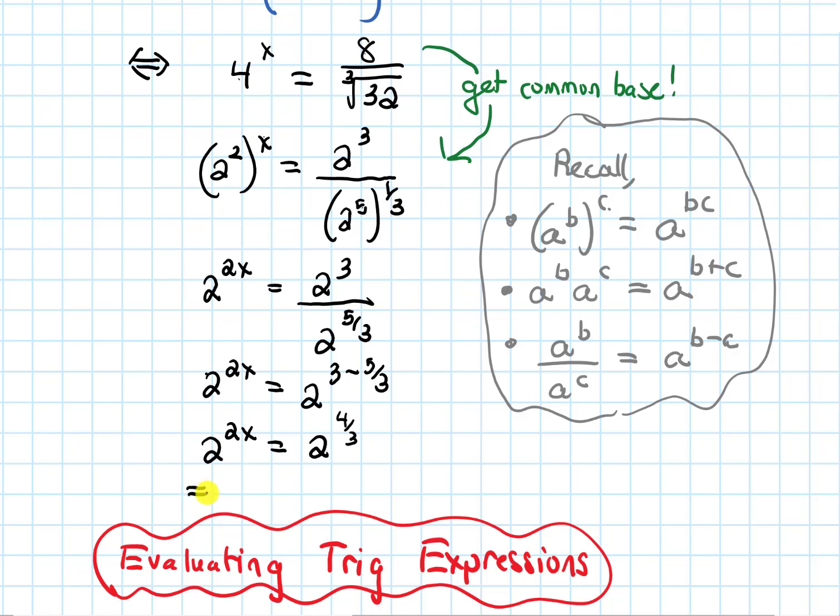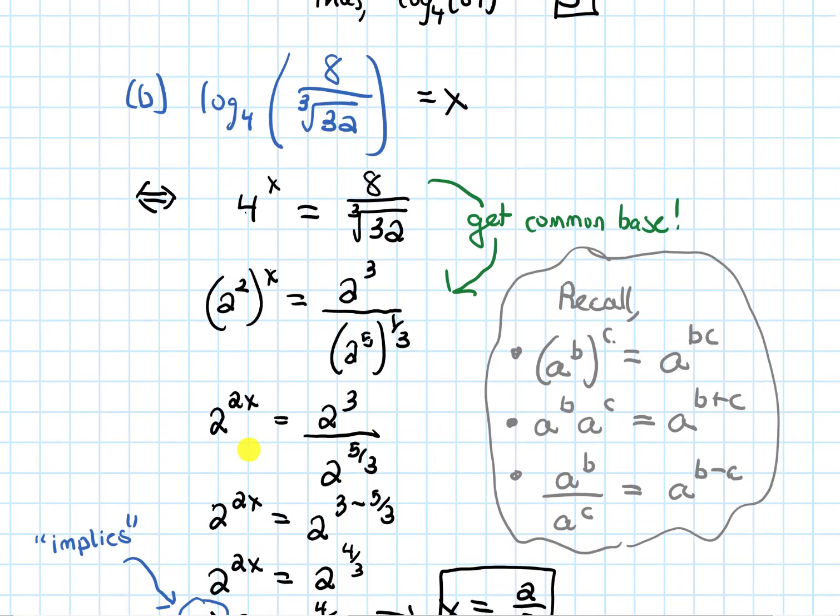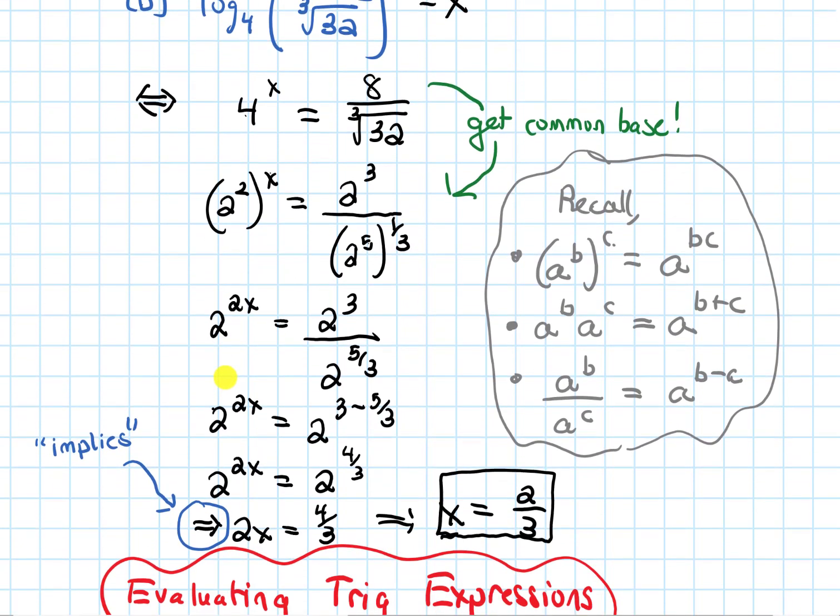At this point, now I can say that this power 2x is equal to 4 thirds. So I put this arrow. When I put an arrow like this, just a one-sided arrow, this means implies. The fact that we have this previous equation implies that I can say this next step. And now if I divide both sides by 2, we get x equals 2 thirds. And that is what this log that we started off with equals, just 2 thirds.